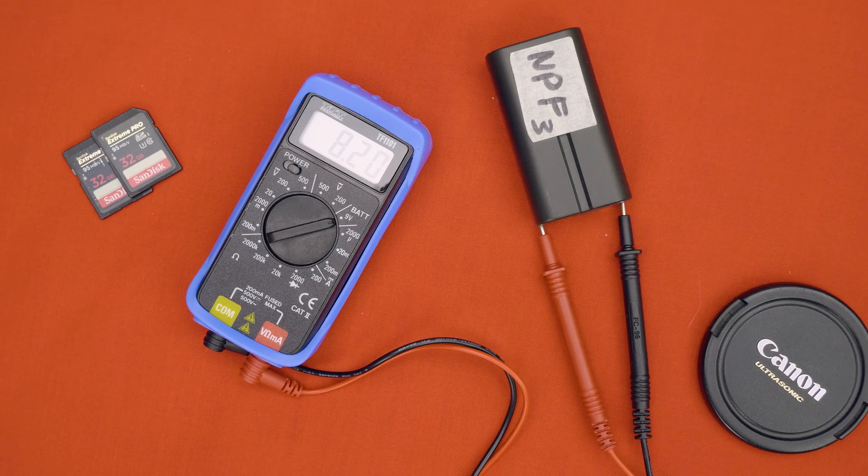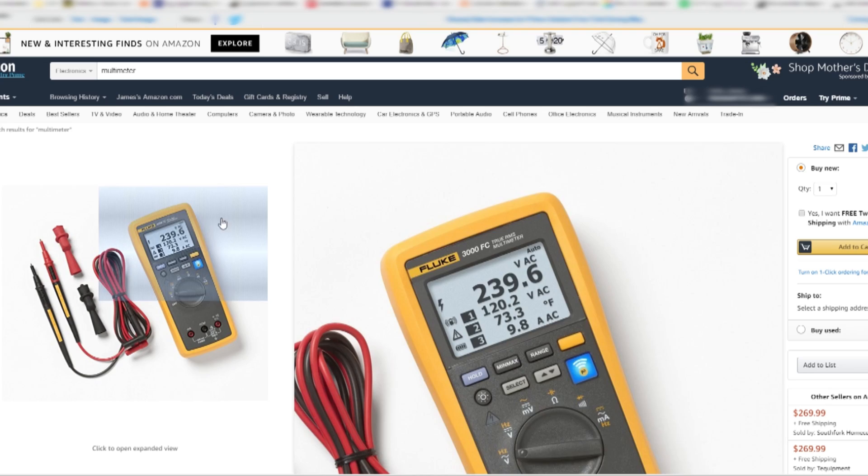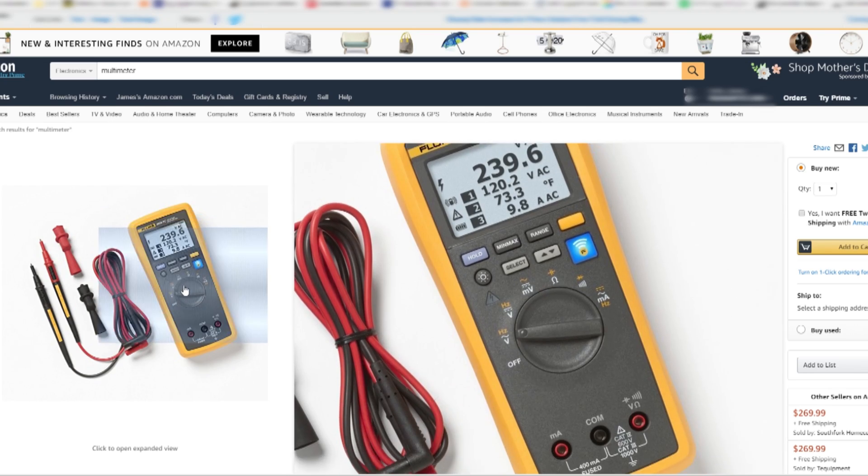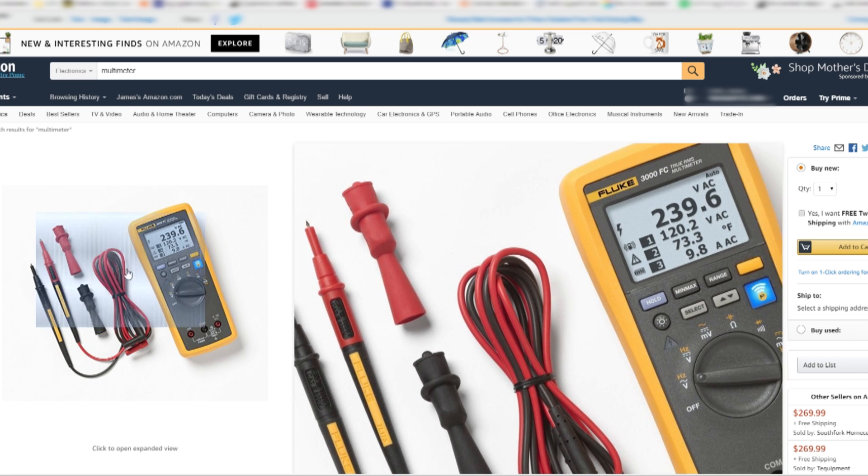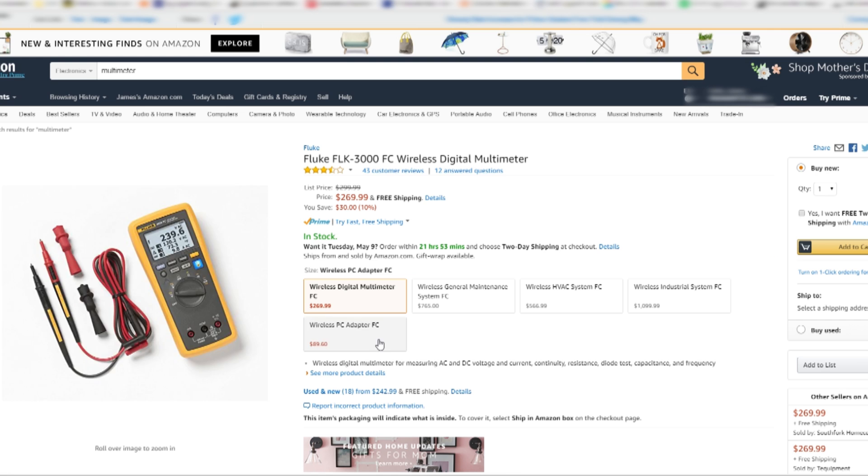And let's face it, multimeters can be quite expensive, with mine clocking in at well over $200 right here on Amazon. So how does this basic $10 unit perform and is it actually worth it?